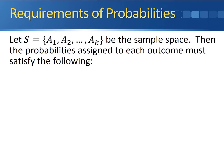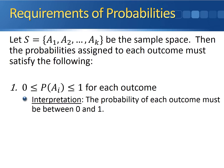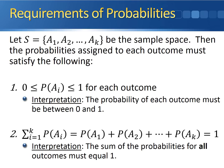Probabilities have to satisfy two requirements. Let S be the sample space for our random experiment, and let A1, A2, up through AK denote the possible outcomes. Then the probabilities assigned to each outcome must satisfy the following two properties. First, the probability of any outcome has to be between 0 and 1 — meaning a probability can never be negative and can never be greater than 1. Second, if you take the probabilities for each outcome and add them all together, the sum of all probabilities for all outcomes has to equal 1.